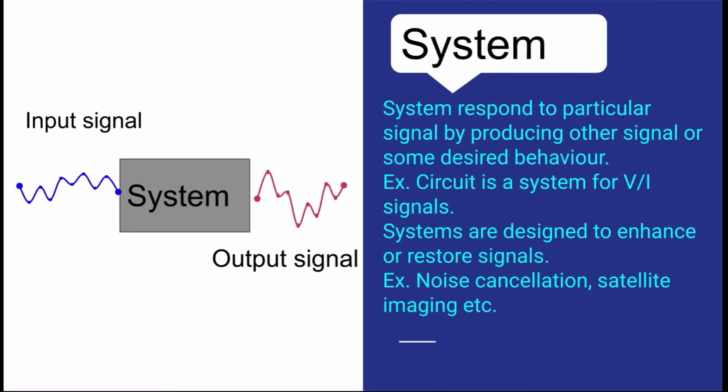Next is a system. A system is something which takes your input signal, processes it and gives your output signal. So system responds to particular signal by producing another signal or some desired behavior. Now this system, it can be like anything. If I suppose I am giving a sine in the input and if I am getting a cos wave in the output, that means it is either a differentiator or an integrator.